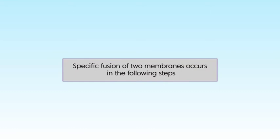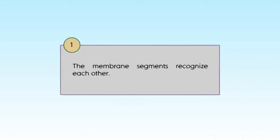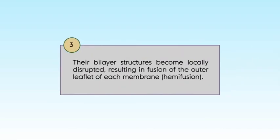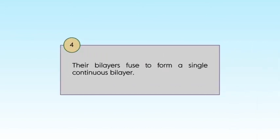Specific fusion of two membranes occurs in the following steps. First, the membrane segments recognize each other. Then their surfaces become closely opposed, which requires the removal of water molecules normally associated with the polar head groups of lipids. Then their bilayer structures become locally disrupted, resulting in fusion of the outer leaflet of each membrane, and their bilayers fuse to form a single continuous bilayer. In receptor-mediated endocytosis or regulated secretion, the fusion process is triggered at the appropriate time or in response to a specific signal. Integral proteins called fusion proteins mediate these events, bringing about specific recognition and a transient local distortion of the bilayer structure that favours membrane fusion.